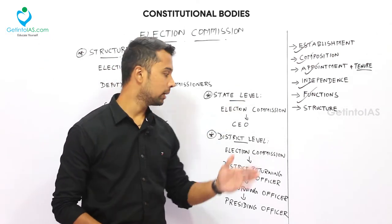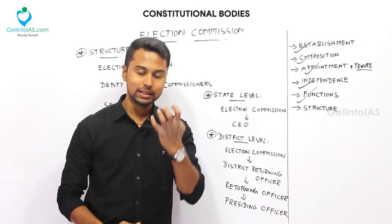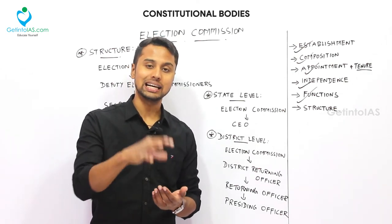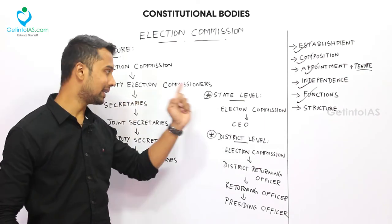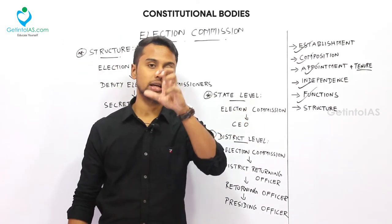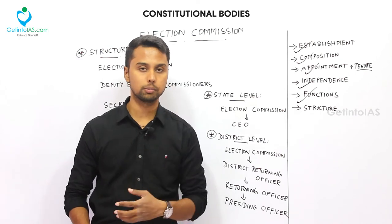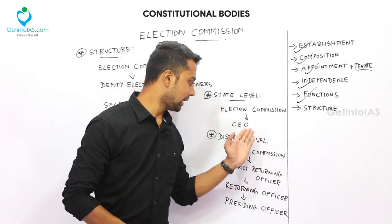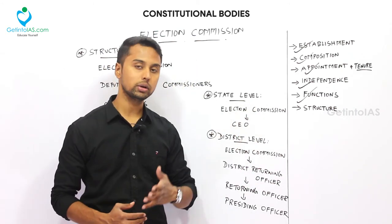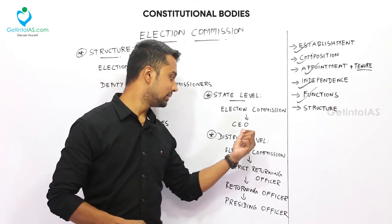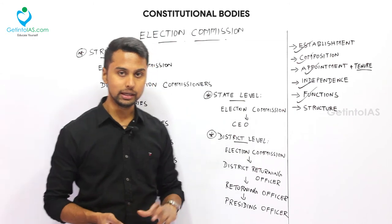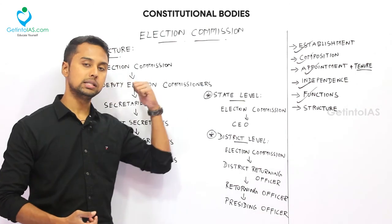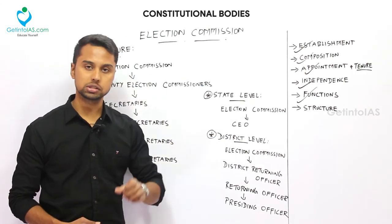At the state level, there is an Election Commission, but this state-level Election Commission does not deal with State Legislative Assembly elections — those are handled by the central Election Commission. The State Election Commission is only concerned with local board elections such as Panchayat and Municipal boards. Under the Election Commission at the state level, there is a Chief Electoral Officer (CEO), who is appointed by the Chief Election Commissioner in consultation with the State Government.